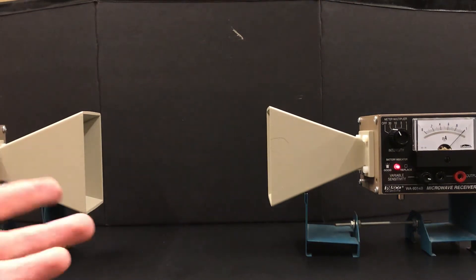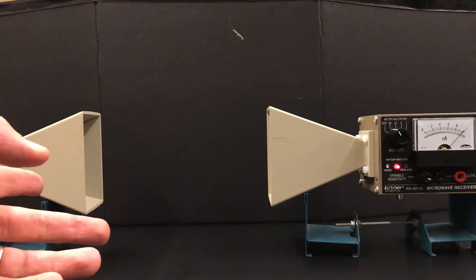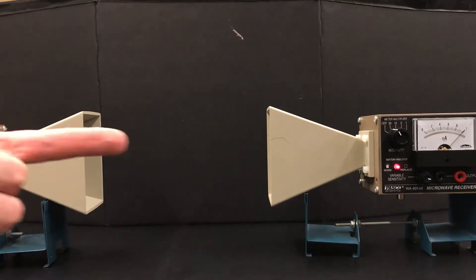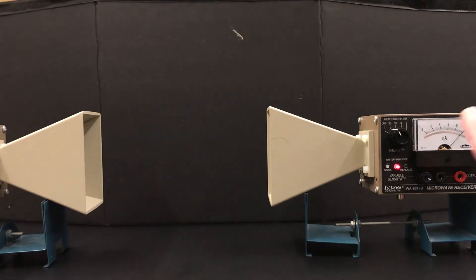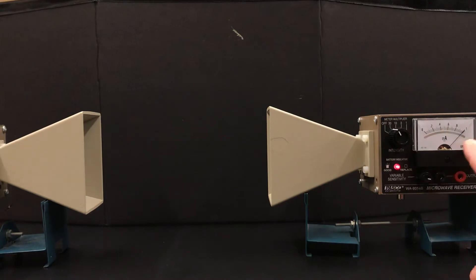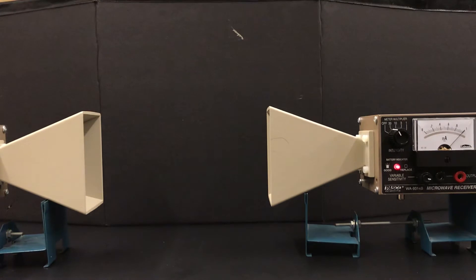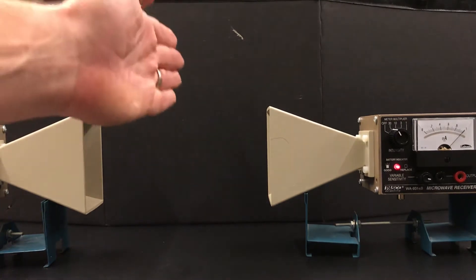We have here a diode microwave transmitter on the left that's beaming microwaves towards our microwave detector on the right. You can see the needle here is what you're going to be watching because it reads off the intensity of the received microwaves at this detector.